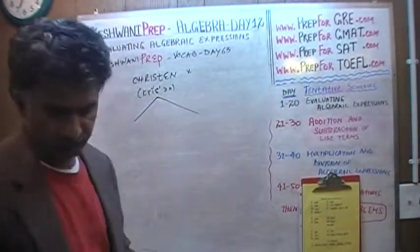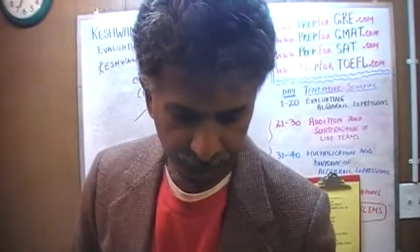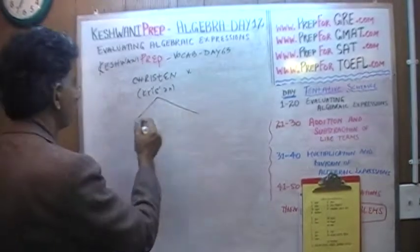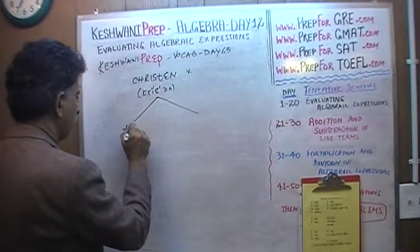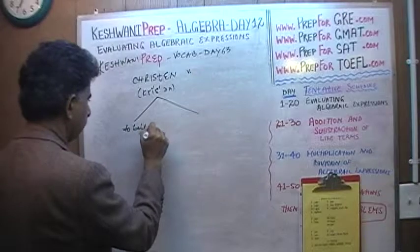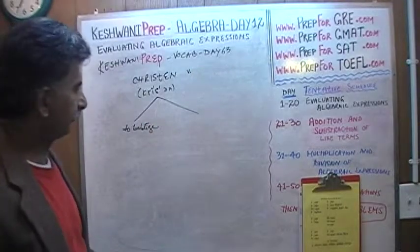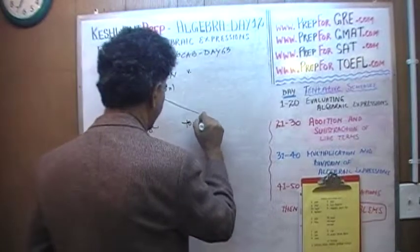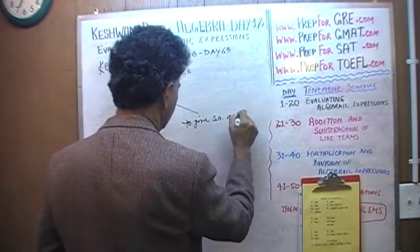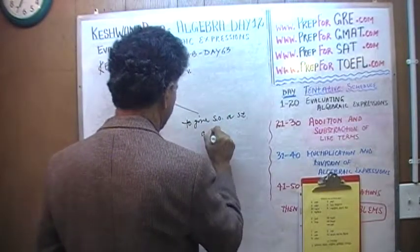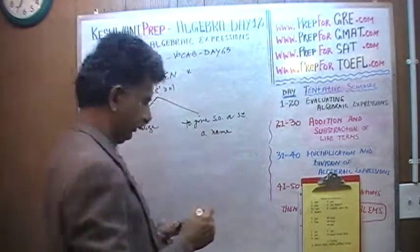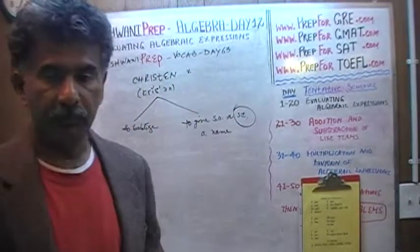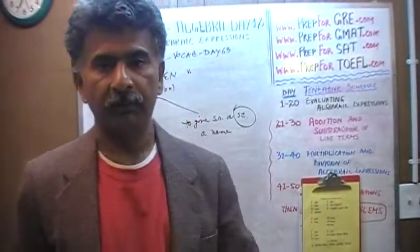This word has two meanings. Some words have two meanings — a literal meaning and a metaphorical meaning. Literally, to christen means to baptize. And metaphorically, it means to give someone or something a name. If you give someone or something a name, it's called christening it.